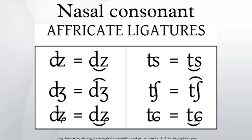Iaai of New Caledonia has an unusually large number of them, with m̥, n̥, ɳ̊, ɲ̊, ŋ̊, along with a number of voiceless approximants.